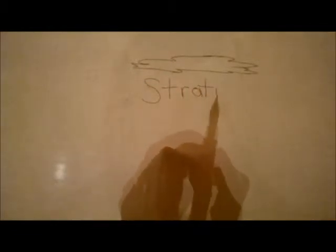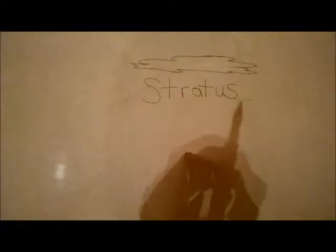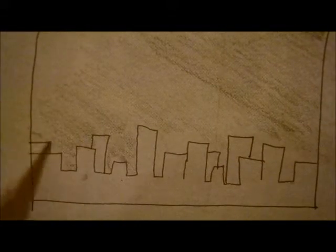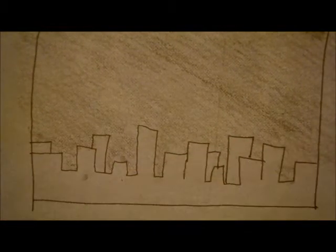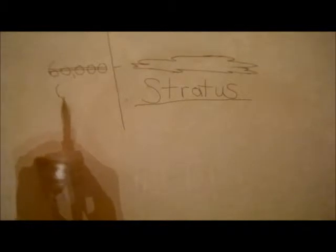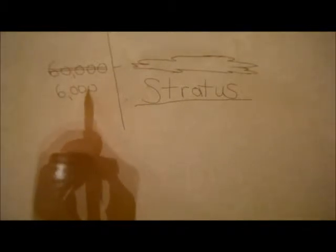Our first cloud today is the Stratus cloud. This is a profile view of a Stratus cloud — you may not recognize it since we usually see it like this. These are your typical gloomy overcast days, simply dreadful. These clouds are found at 6,000 feet and below in our atmosphere. They form when weak vertical air currents lift a thin layer of air high enough to get condensation, or when a layer of air is cooled from below its dew point and water vapor condenses into liquid droplets.